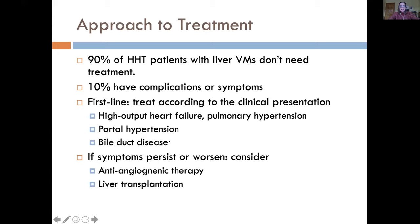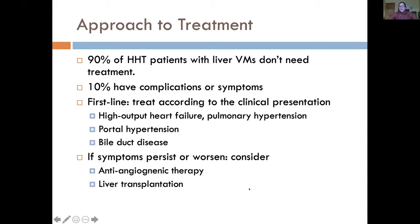Each complication is treated similarly to how it would be outside of HHT, though heart failure with secondary pulmonary hypertension really does require an expert team. After first-line treatment, if patients stabilize we continue therapy and monitor. If symptoms persist or worsen, that's when we consider anti-angiogenic therapy or liver transplantation. A few years ago we only had liver transplantation as an option — adding anti-angiogenic therapy has really changed the face of liver vascular malformations care.